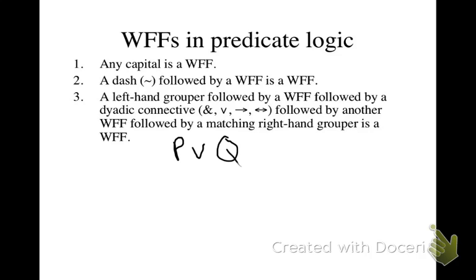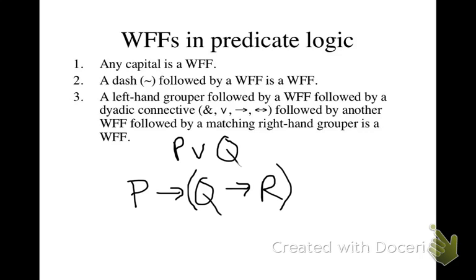We don't need the outermost parentheses. However, if we have something like P → Q → R, that needs parentheses — either around Q → R or around P → Q. Technically, according to the definition, we would need an outermost set of parentheses, but we really don't. We can drop that convention — it's in the definition, but we don't actually follow that part.